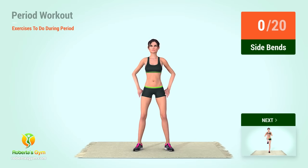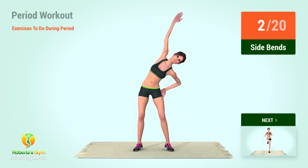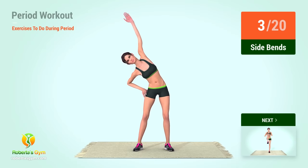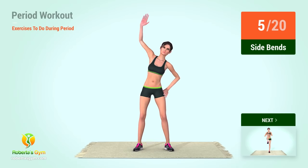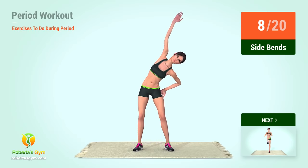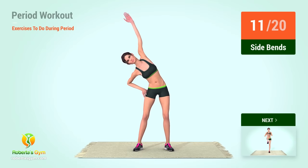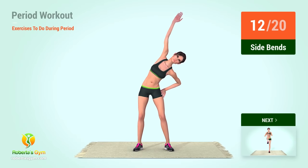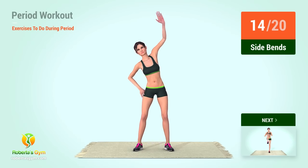Up next, side bends. In 5, 4, 3, 2, 1, go. 1, 2, 3, 4, 5, 6, 7, 8, 9, 10, 11, 12, 13, 14, 15.